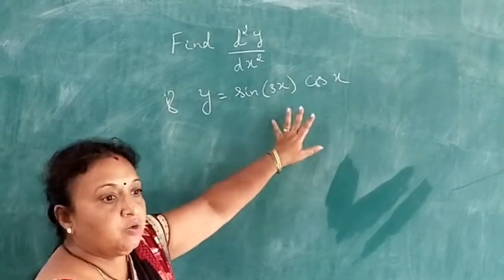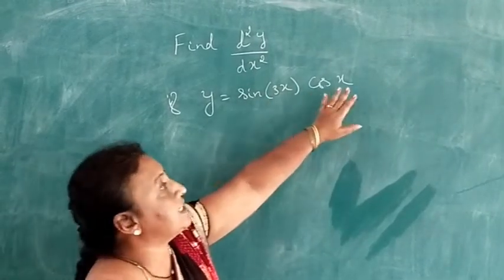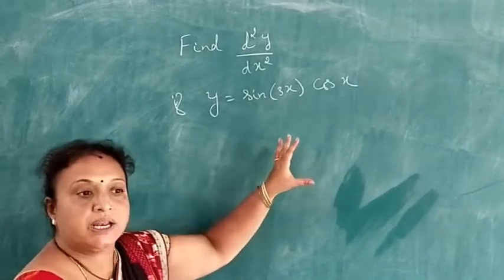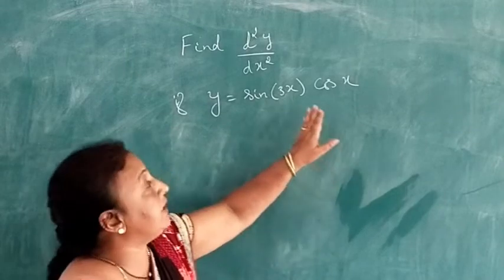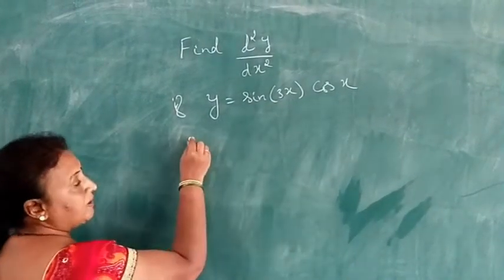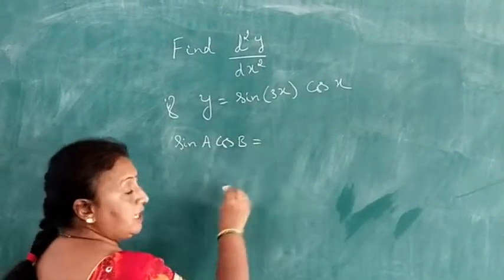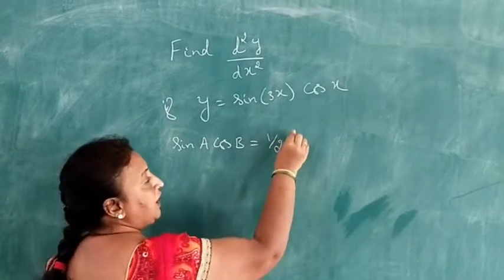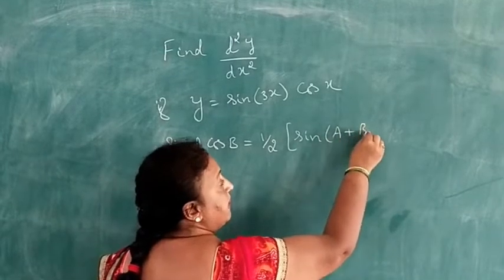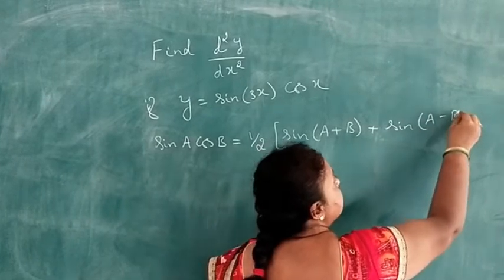This problem involves a product of two functions. The first function is sin 3x and the second function is cos x. We apply the trigonometric formula: sin A into cos B equals half into sin(A+B) plus sin(A−B).